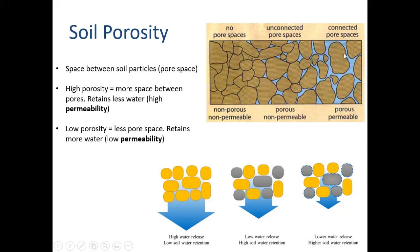Now, if we look at the rightmost image, you have a very porous, very permeable pore space. The space between these soil particles is much larger. It's very porous, very permeable - it has high permeability for water to flow through and create groundwater. A lot of groundwater infiltration can occur here.